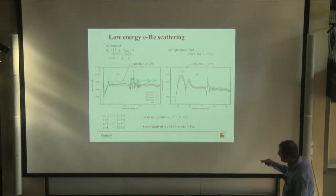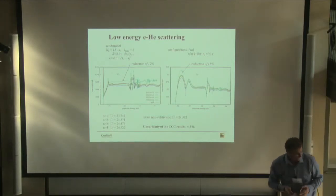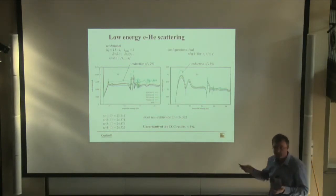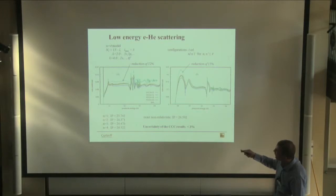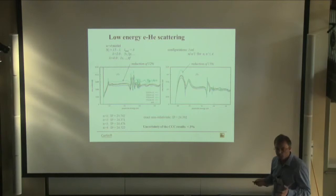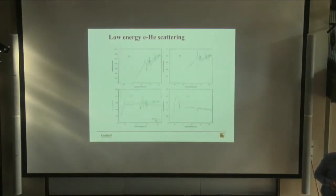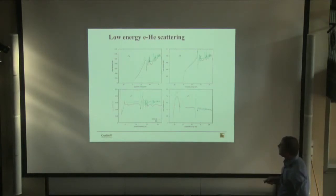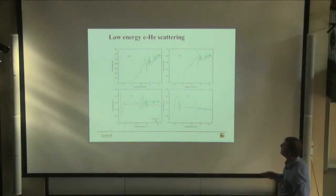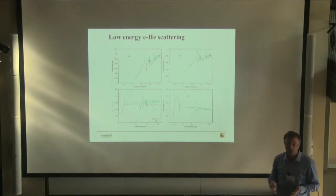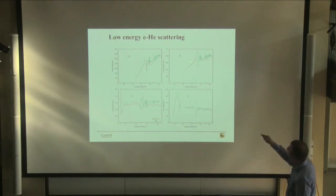The uncertainty in the CCC result is about 3%, which is difficult to estimate precisely. By looking at the difference between the red and green curves and considering that further improvement might reduce the difference, this comes from a somewhat hand-waving argument. For all n=2 states, the difference between the R-matrix results and our largest calculations is sometimes large and sometimes small depending on the energy range. For some transitions like the 2-triplet P, it is not that large, but for the 2-singlet P, it is much larger.